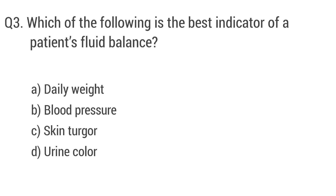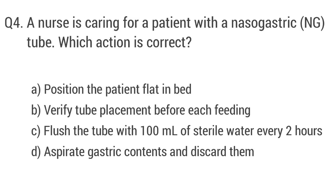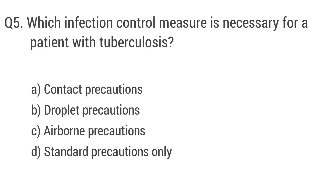Question 3: Which of the following is the best indicator of a patient's fluid balance? The right answer is option A: Daily weight. Question 4: A nurse is caring for a patient with a nasogastric tube. Which action is correct? The right answer is option B: Verify tube placement before each feeding.